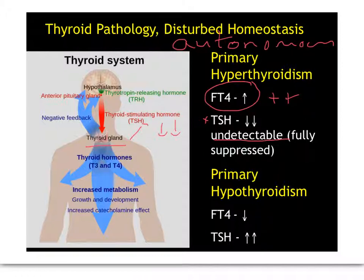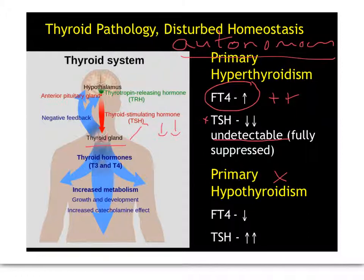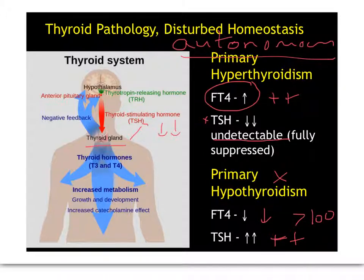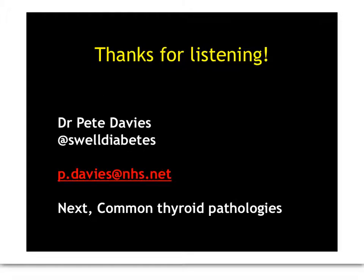The flip side is in primary hypothyroidism. In this case the thyroid gland is failing to make thyroid hormone — the opposite of being autonomous. Usually it's an autoimmune process, so the effect of inflammation within the thyroid stops the thyroid responding to TSH. As the level of thyroid hormone falls, the negative inhibition on TSH is released, so TSH levels get high — and indeed can be very high, for example greater than 100 — which believe me is very high in the context of primary hypothyroidism. So that gives you a little bit of a taster for what's to come in the next instalment: common thyroid pathologies. Thank you for listening, see you next time.